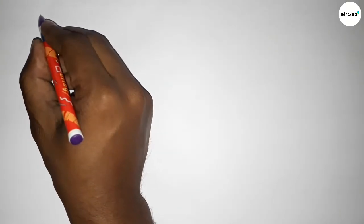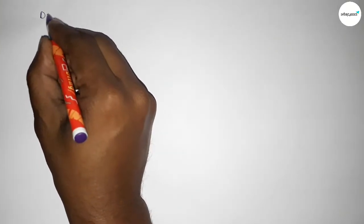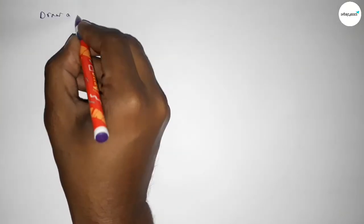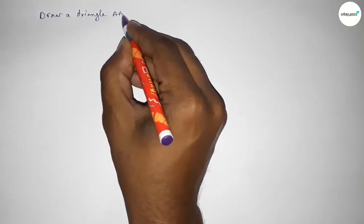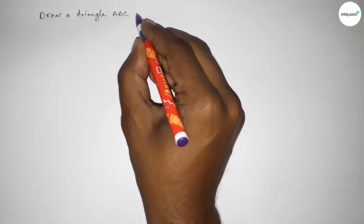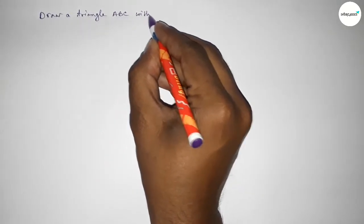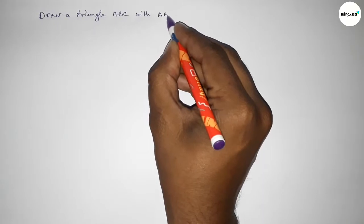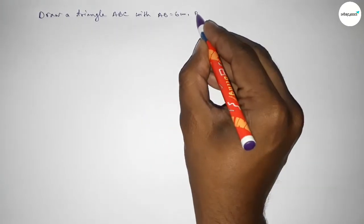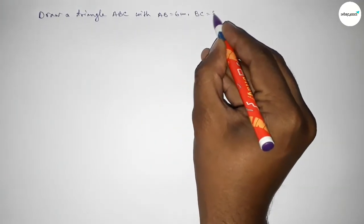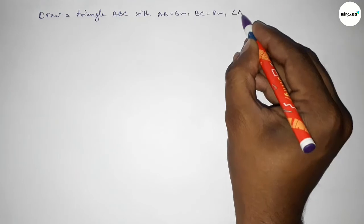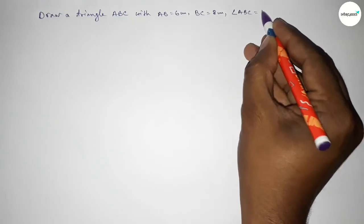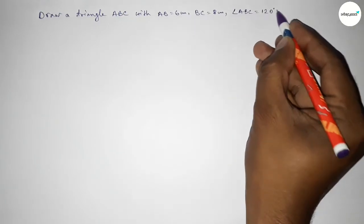Hi everyone, welcome to SI Share Classes. Today in this video we have to draw a triangle ABC with AB equal to 6 centimeter, BC equal to 8 centimeter, and angle ABC equal to 120 degrees. So let's start the video.